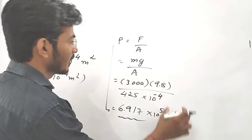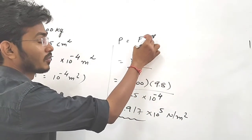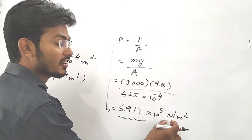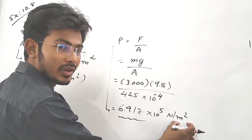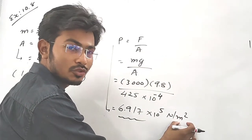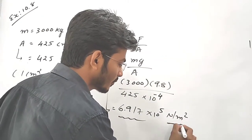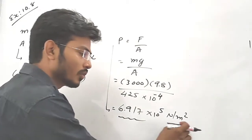How can we calculate the unit? Force F has the unit Newton and area has unit meter square. That is why the unit of pressure is Newton per meter square.